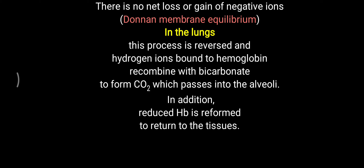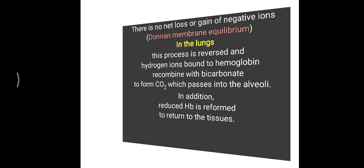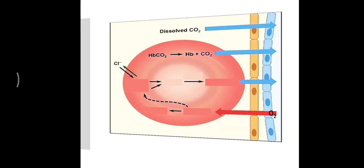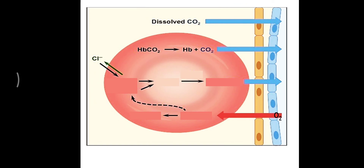The reduced hemoglobin (HHb) combines with oxygen to form oxyhemoglobin, which goes back to the tissue level to provide oxygen. When HCO3- enters back into the red blood cell at the lung level, that also leads to the reverse chloride shift.